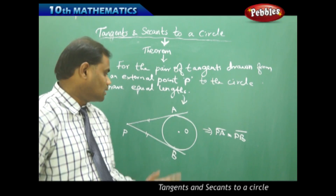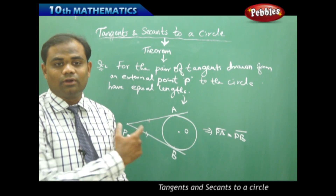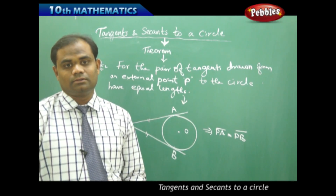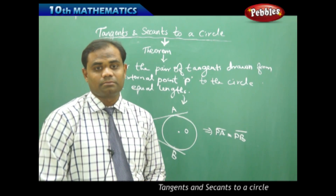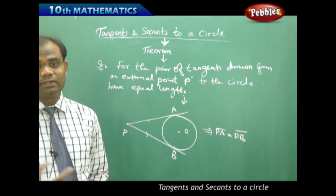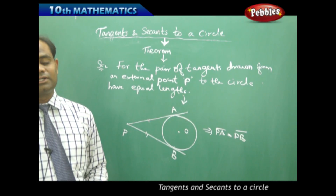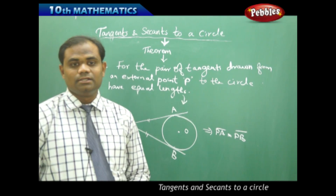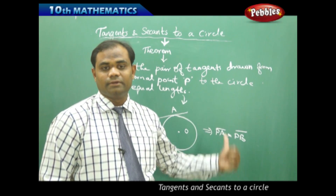Two tangents are equal if they are drawn from an external point to the circle. So let's see the proof of this statement through the given, required to prove, construction, and the proof.